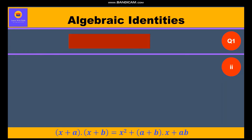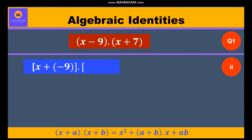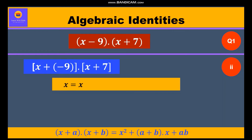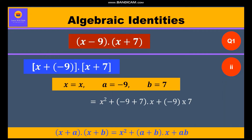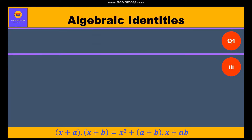Now let's take the second question: (x - 9) into (x + 7). We take the minus inside the bracket to get x + (-9) into x + 7. So x is equal to x, a is equal to -9, and b is equal to 7. Substituting into Identity 5: x² + (-9 + 7)x + (-9 × 7), which equals x² - 2x - 63.